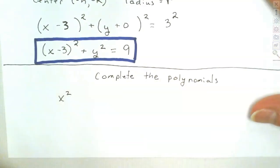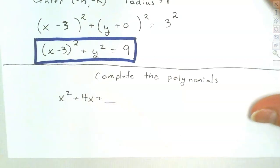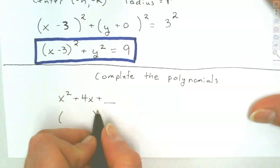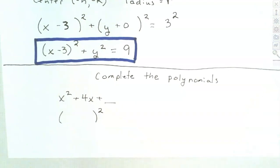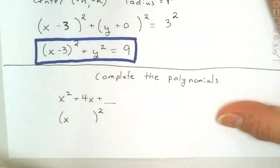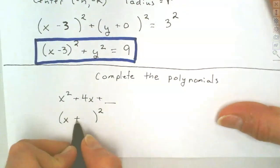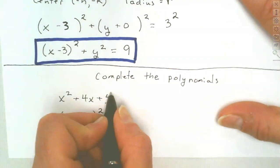For x² + 4x + ___, we want this to factor. What we do is take the middle number — the coefficient of x — and square it to fill in the blank. So it comes down as (x + 2)², because half of 4 is 2, and 2 squared is 4.